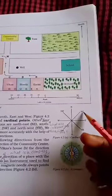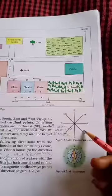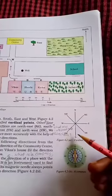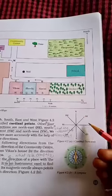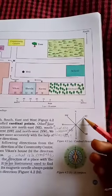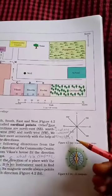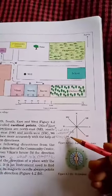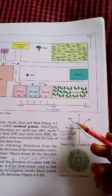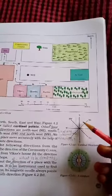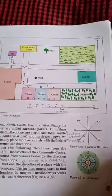इन चार directions के अलावा extra चार और दिख रहे हैं। जैसे north और east के बीच में NE यानी north east, east और south के बीच में south east, south और west के बीच में south west, और west और north के बीच में north west।